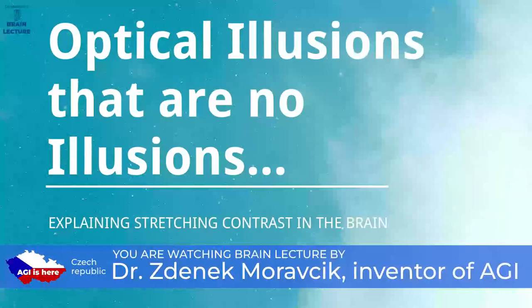This video will deal with certain optical phenomena in the human brain. I will explain that what is usually called color constancy is in reality a simple process that is well known in computer science, especially in the fields of computer graphics and image processing, where it is called contrast stretching. I promised to create this video many months ago, but had no time until now. So at the end of this year, I am fulfilling my promise — here is the video about contrast stretching in the brain.